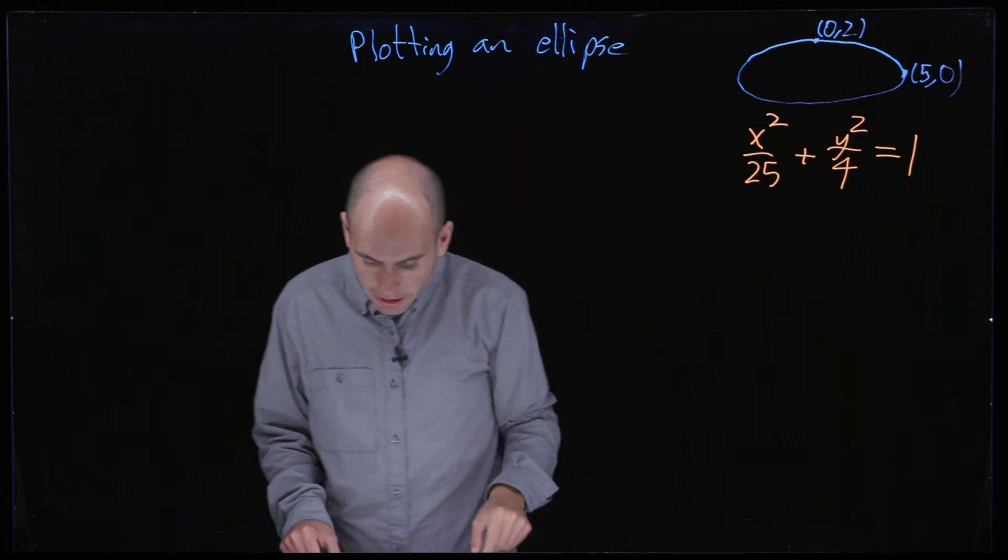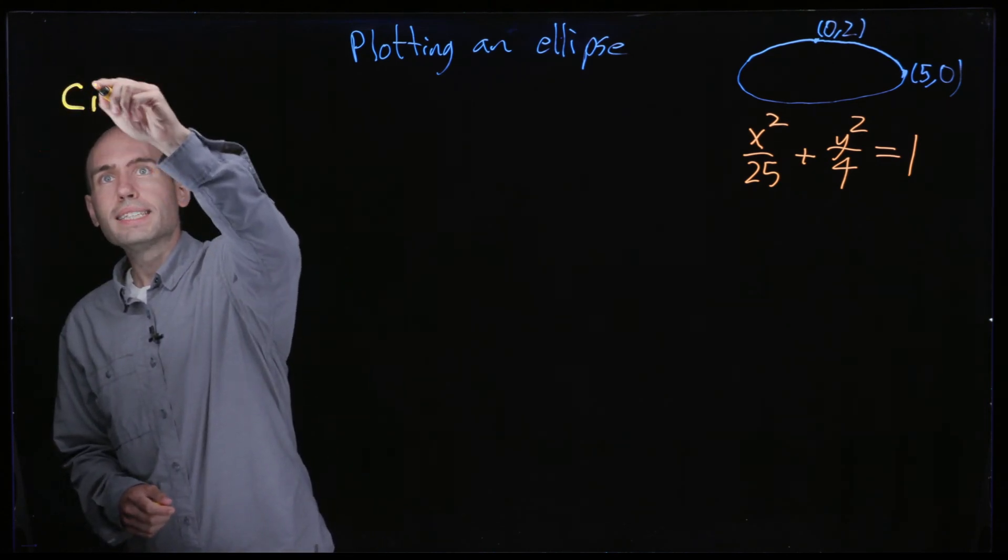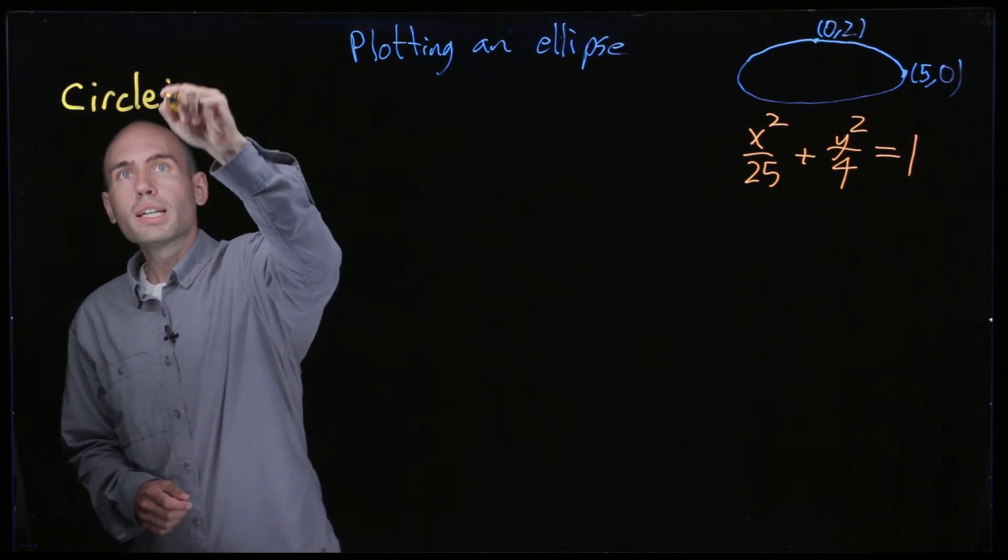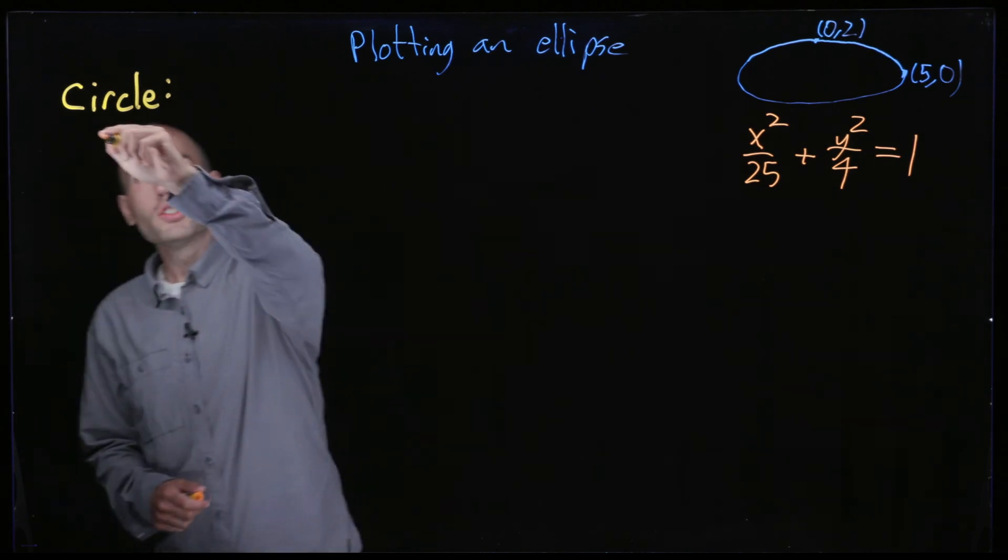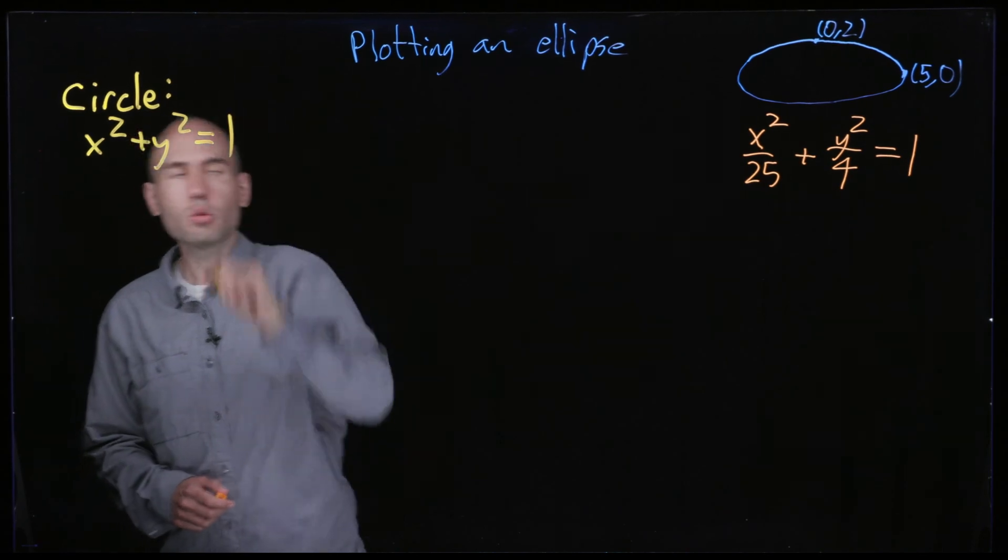And so maybe to do that let's talk about some easier case. What about instead of an ellipse, what about a circle? So that's x squared plus y squared equals 1.